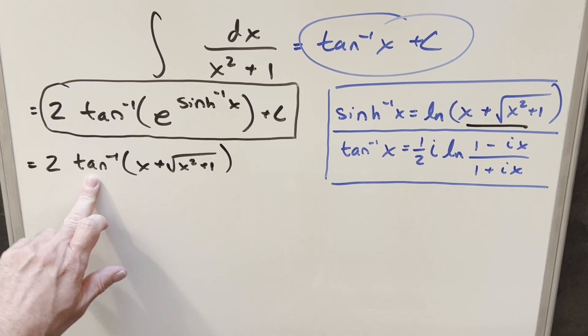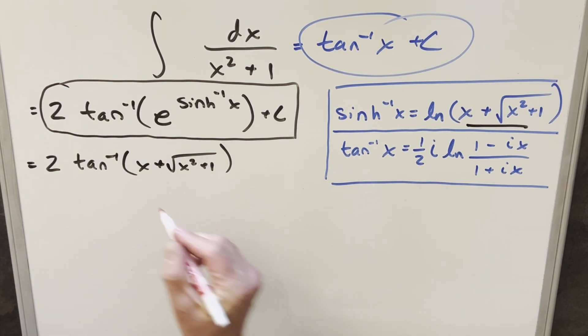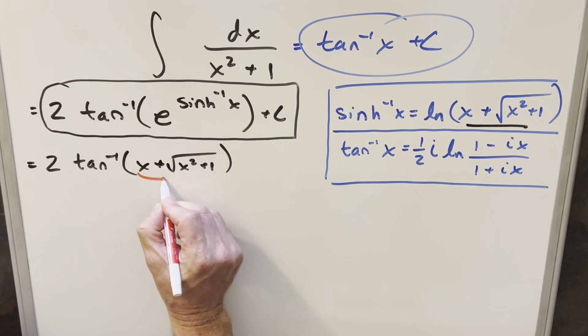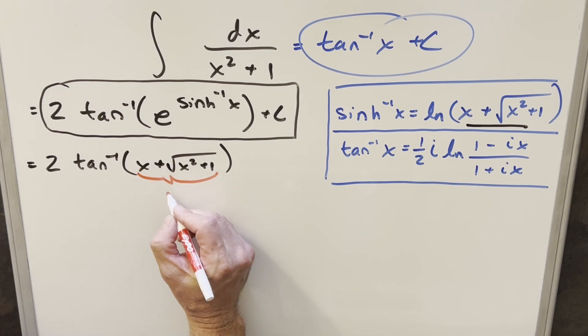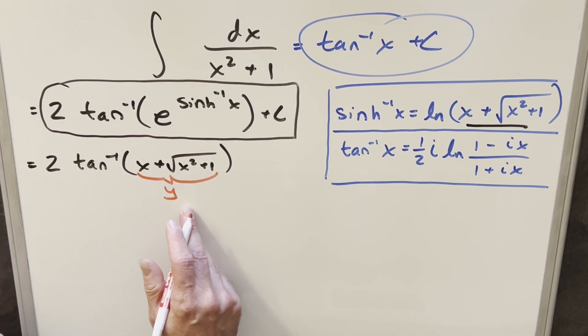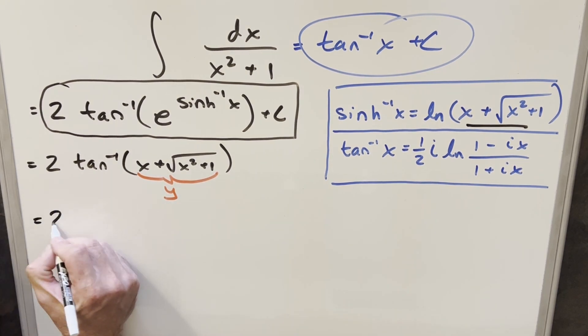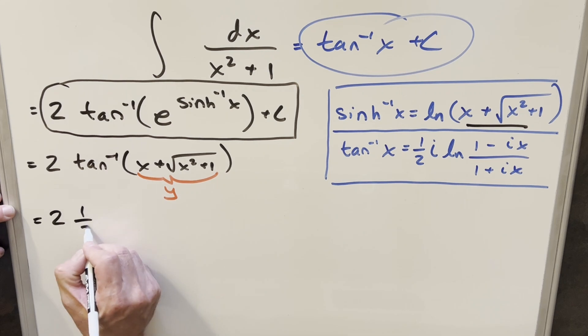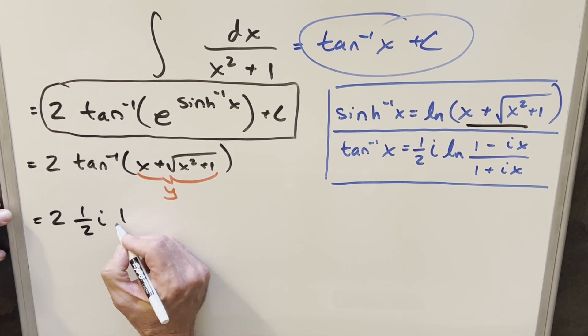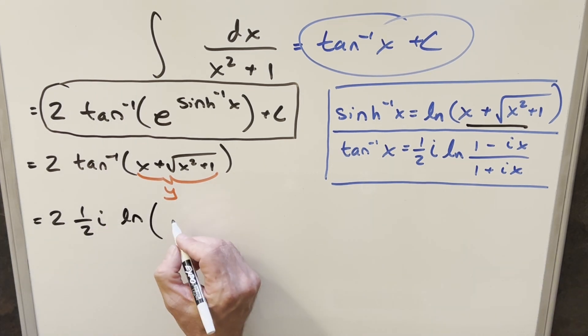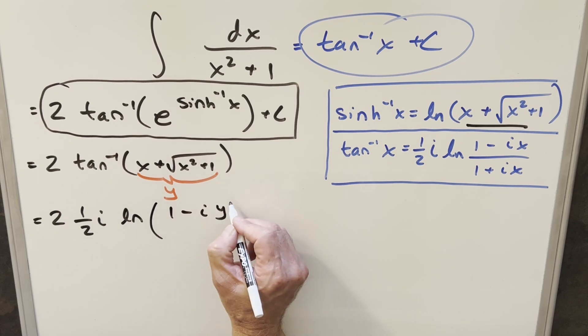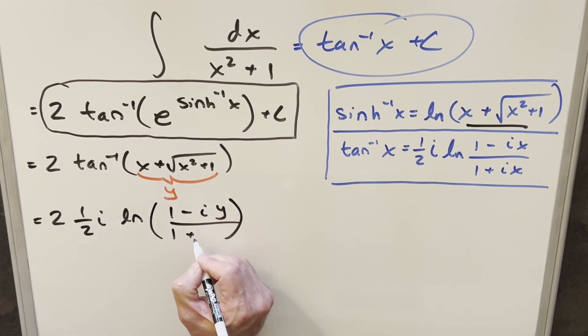And then next, we'll take this and rewrite it using this complex definition. But in order to simplify this so I can just write less, let's do like a little substitution. For this whole mess right here, I'm just going to call this y. We'll come back and back substitute later. But right now, it's just going to save me some writing. So plugging it all in, we have our 2 here. This is going to become half i natural log. And our input here is going to be 1 minus i. We're going to use y instead of x here. And this is going to be 1 plus i times y. And then, of course, we can multiply 2 times a half and get 1. But I'm not going to do that.